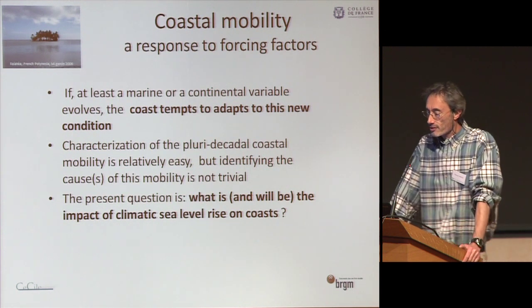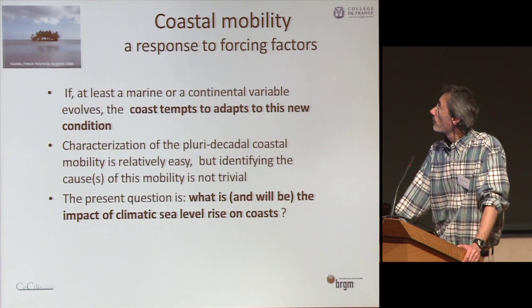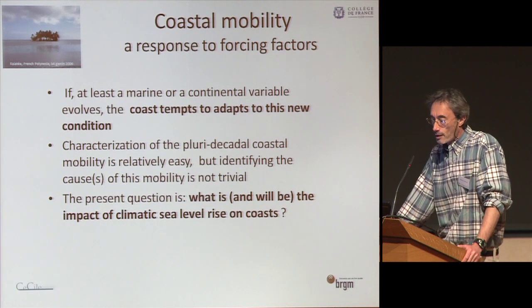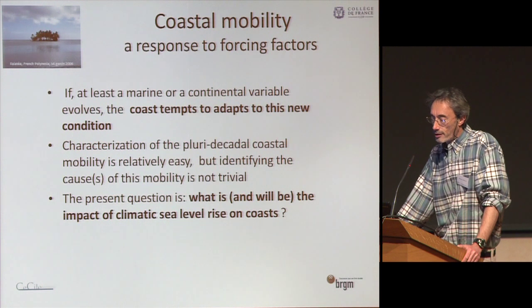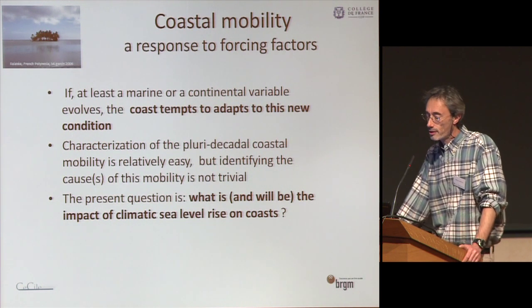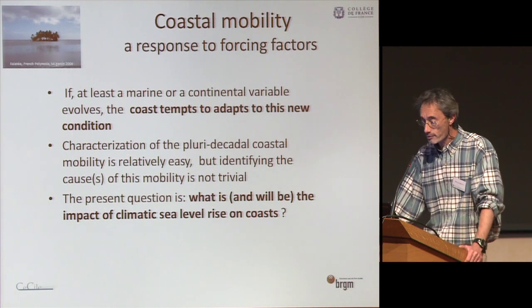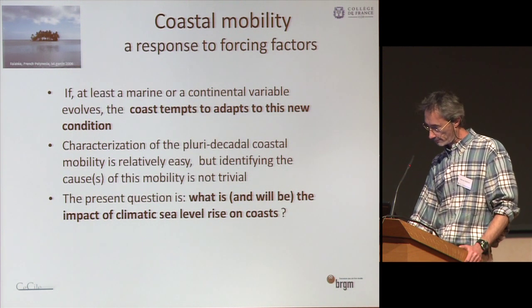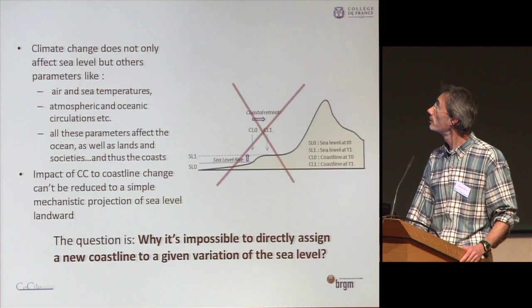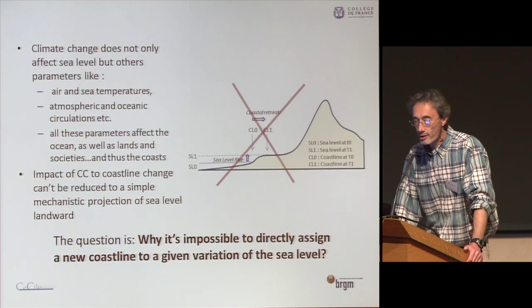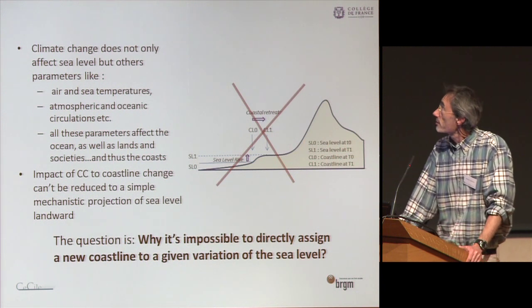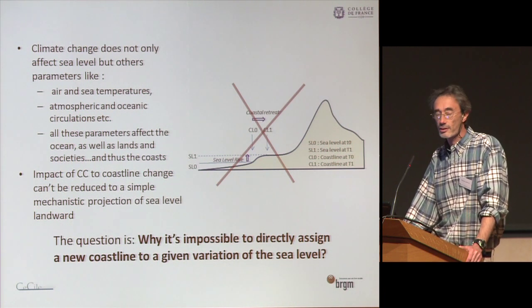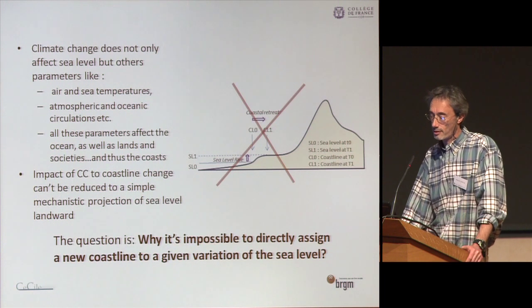Coastal mobility is a response to forcing factors, whether marine or continental. The coast tends to adapt to new conditions. Characterization of pluridecadal coastal mobility is relatively easy, but identifying the causes of this mobility is not trivial. The present question is: what is and will be the impact of climate and sea level change on the coast? Climate change does not only affect sea level, but also parameters like air and sea temperatures, atmospheric and oceanic circulation, which affect the ocean as well as land and society, and thus the coast.